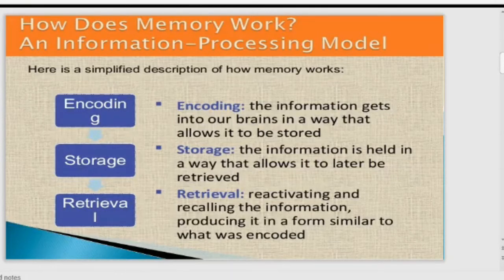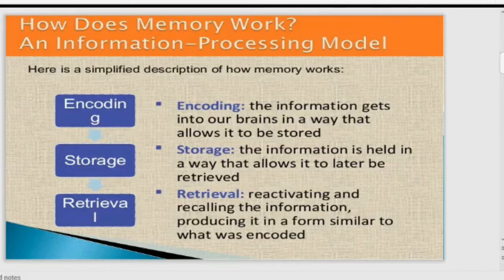For example, if we want to memorize a phone number, we read it once or twice — that is taking information into our brain. Then we store it, and when we need to dial that number, automatically our fingers move in the same order. That is retrieval. So the memory processing model comprises these three things: encoding, storage, and retrieval.